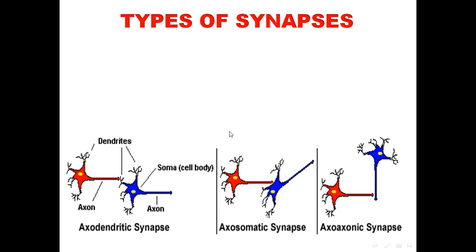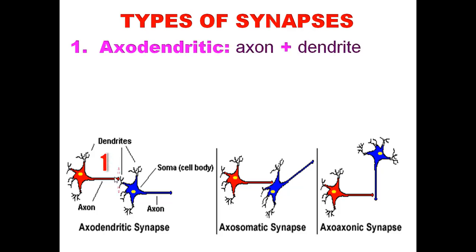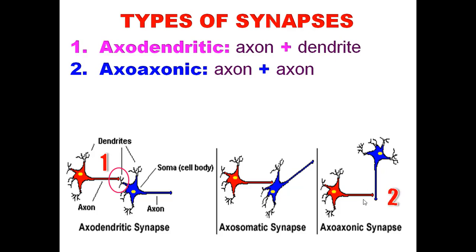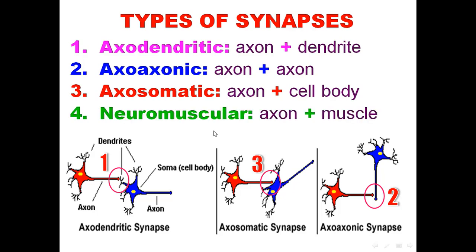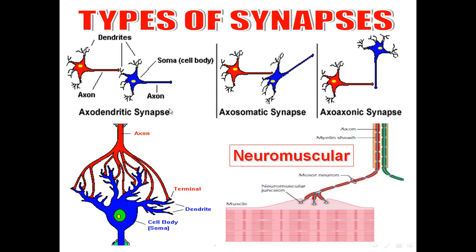According to the two parts forming the synapse, synapses are divided into: axodendritic — between axon and dendrite; axo-axonic — between axon and axon; axosomatic — between axon and cell body; and neuromuscular — between axon and muscle.